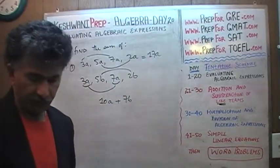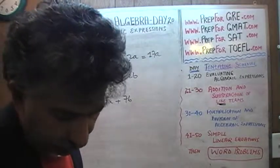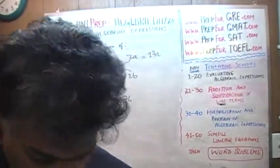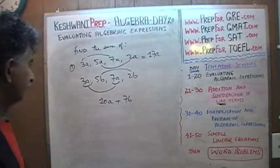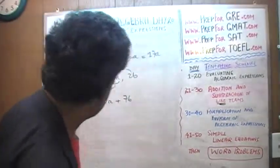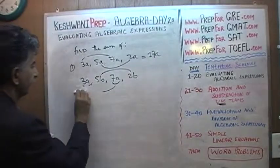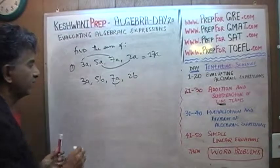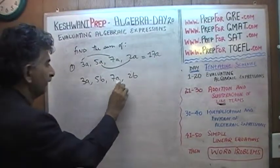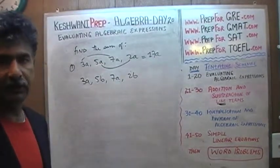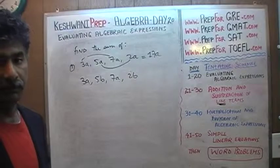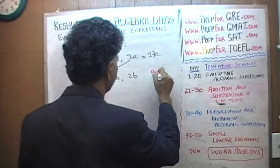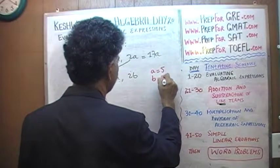Now if you want to understand what we are doing here, what it means to combine the terms, you can understand that by taking a numerical example. We can convert this into a simple numerical example. Think of a's and b's in terms of numbers because that's what they are. a's and b's represent some numbers. Say for example if we are told that a equals 5 and b equals 3.